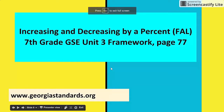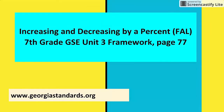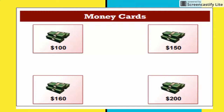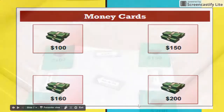The next task for RP3 is Increasing and Decreasing by a Percentage, a formative assessment lesson from the Mathematics Assessment Project. Students are given four various amounts of money and must decide between each value whether it's an increase or a decrease, and by what percentage they go up or down.